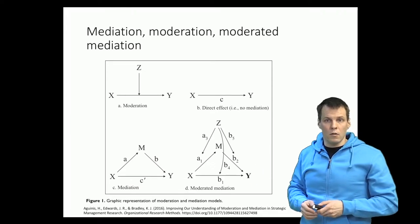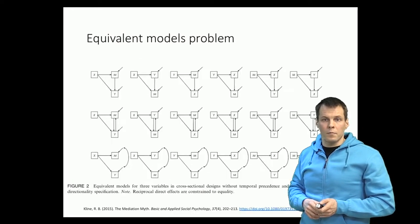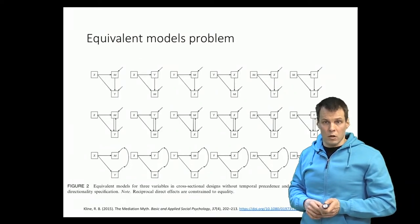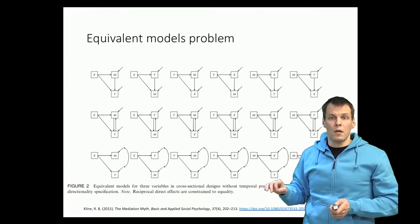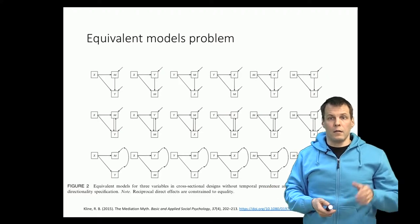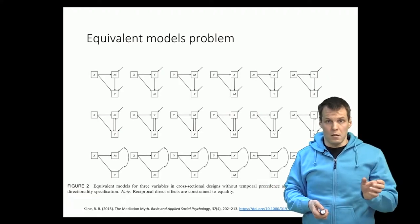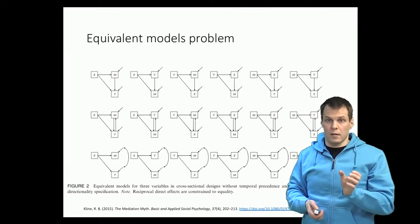There is yet another concern you need to take into account. The concern is that the mediation model is just identified. If you just look at correlations, then the mediation model will always explain those correlations perfectly, so it can't be tested empirically just with three variables.